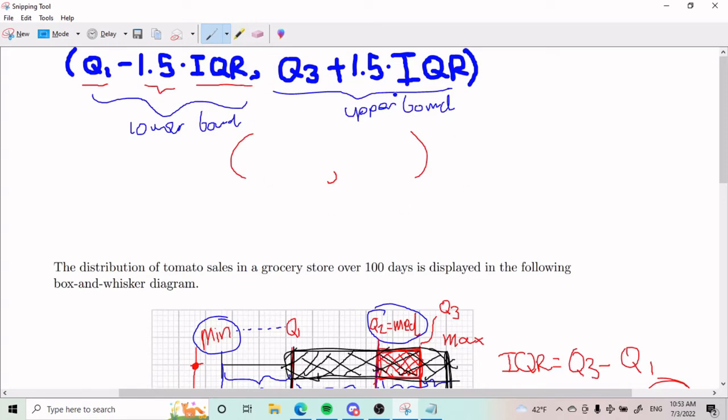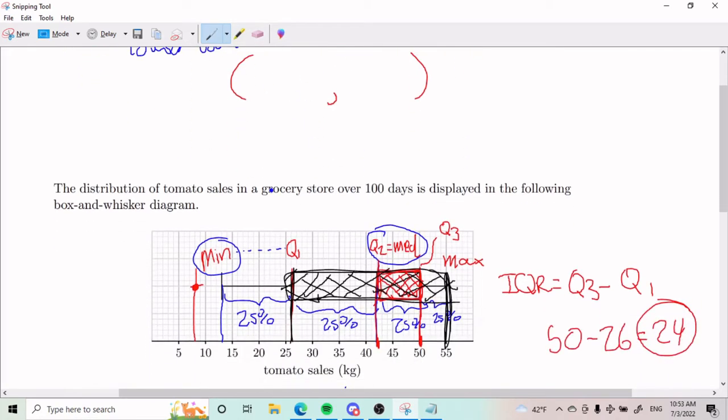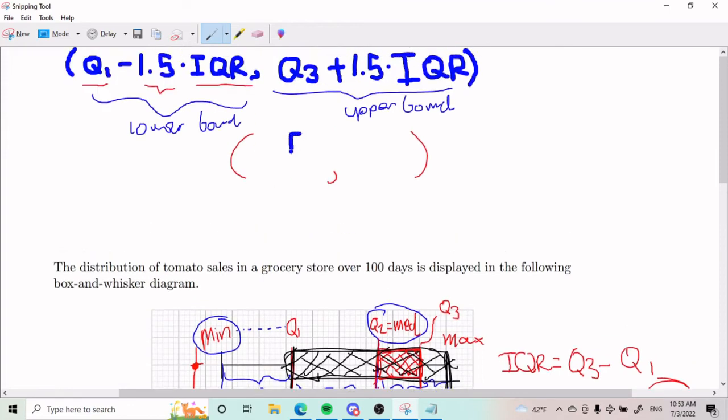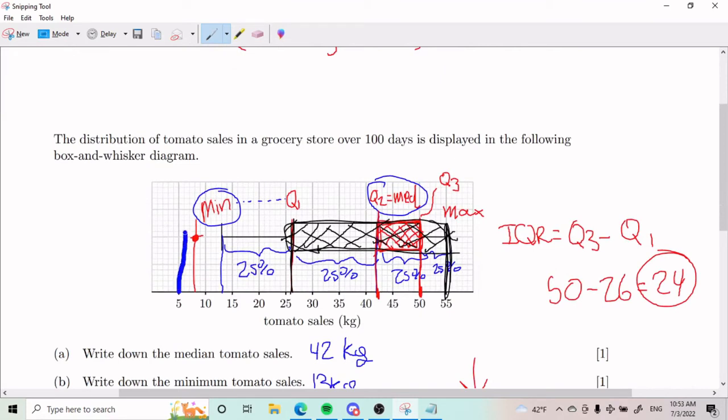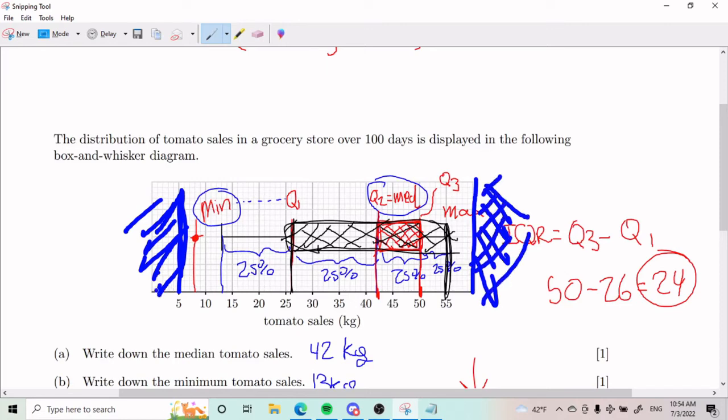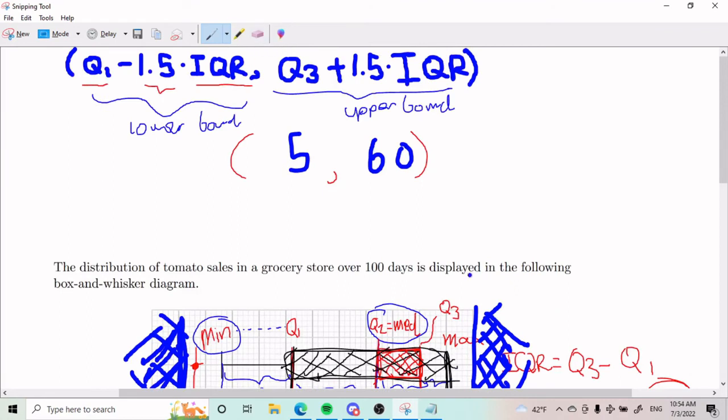Just so we understand what's going on. If the numbers in my interval are, let's say, 5 and 60, that means any numbers that land on this side or this side will be considered outliers. That's the key information it's trying to tell me.